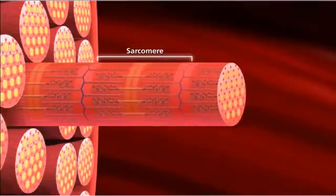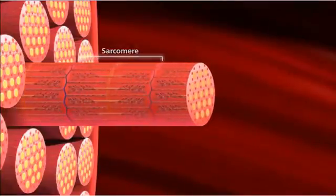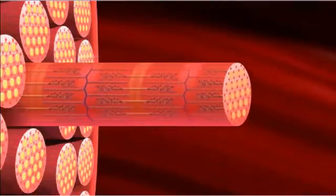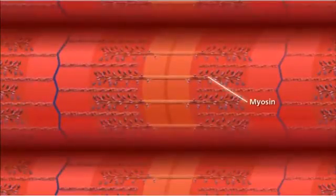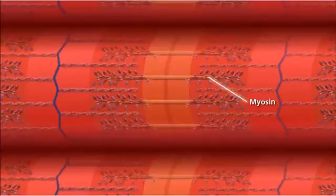The muscle contracts when these filaments slide past each other. The thick filaments are myosin, which are anchored at the center of the sarcomere, called the M-line.